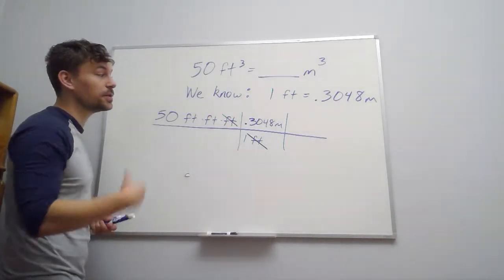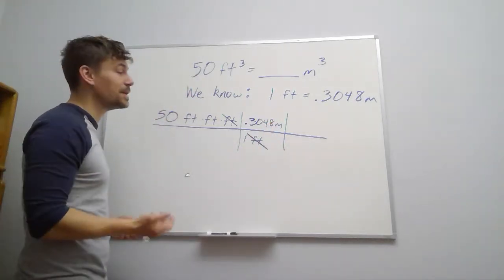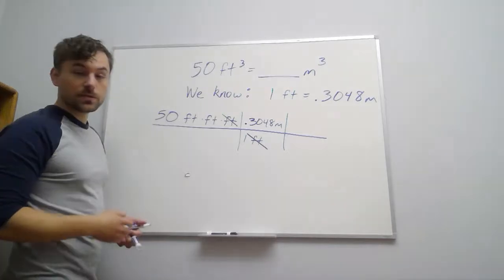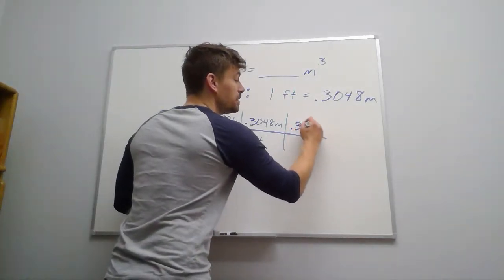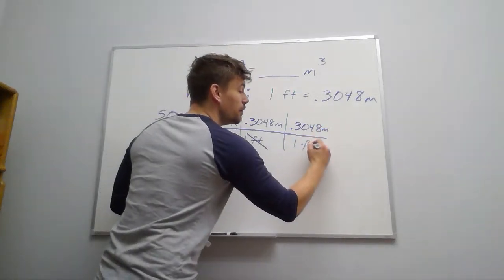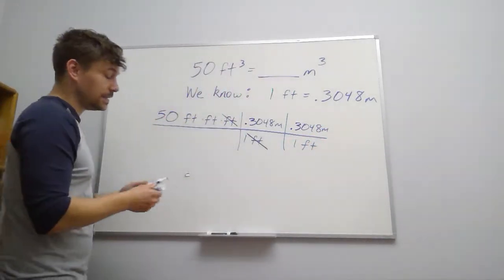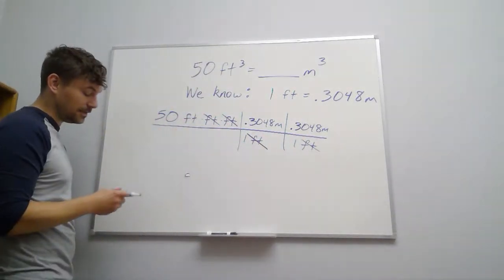So we still have some work to do. And we only picked up one unit of meters. We still need those other two dimensions. Well, we can just keep using the same conversion. So 0.3048 meters on top, one foot on the bottom. That's going to cancel another unit of feet. And then we just have one left.